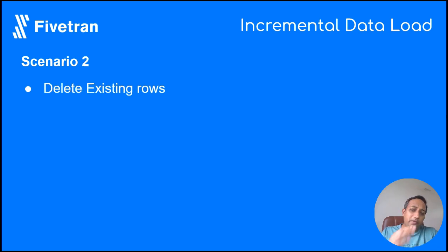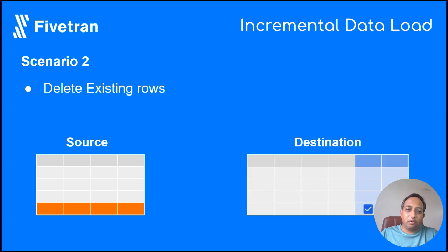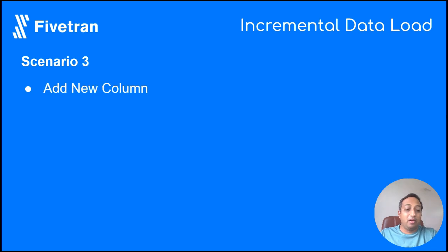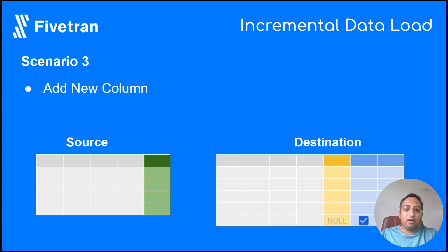For the scenario where you delete an existing row at your source, FITRAN doesn't delete the row at the destination. Instead, it updates the FITRAN_deleted column — which FITRAN creates — and marks it as true. This is a soft delete option that FITRAN offers.